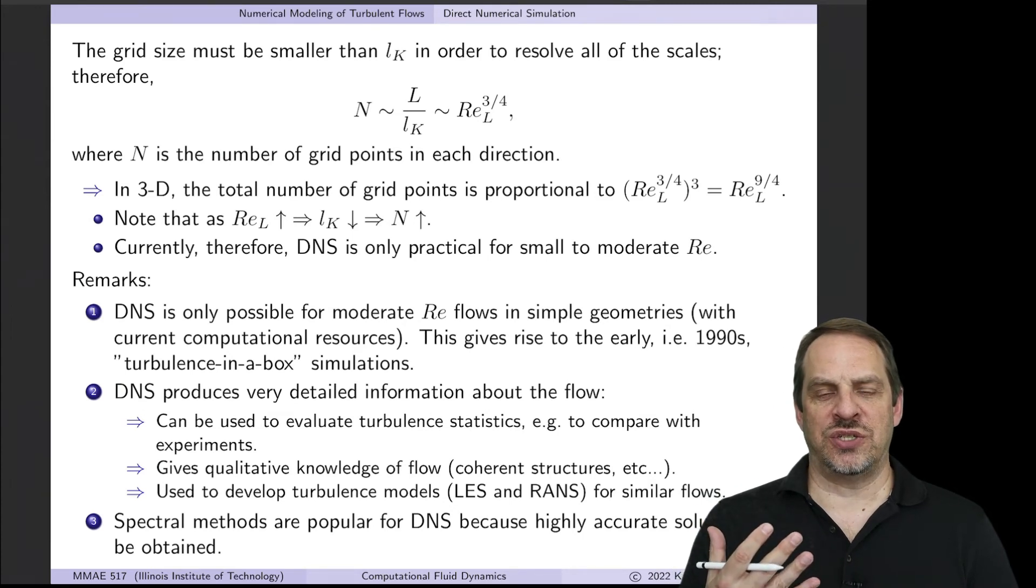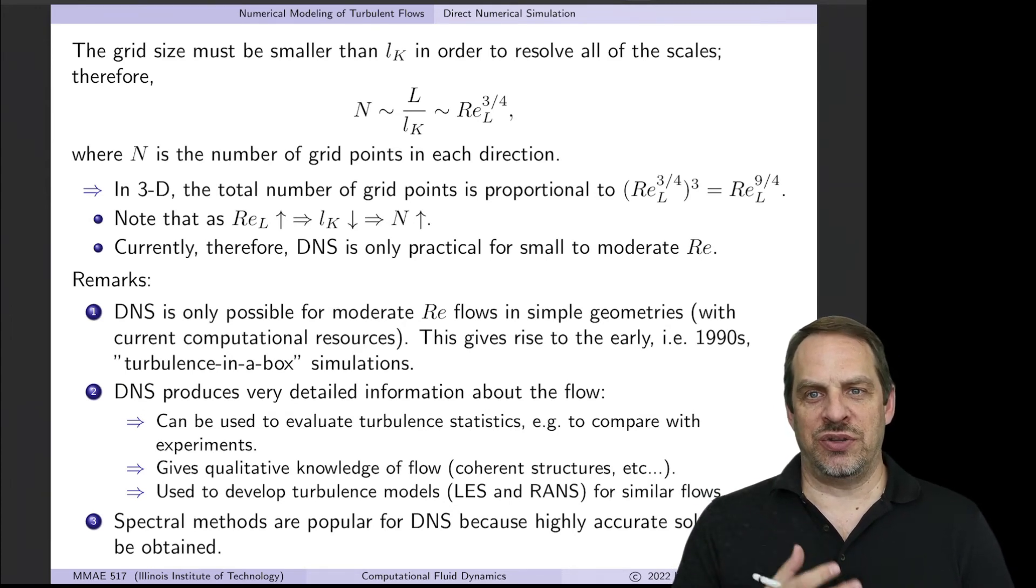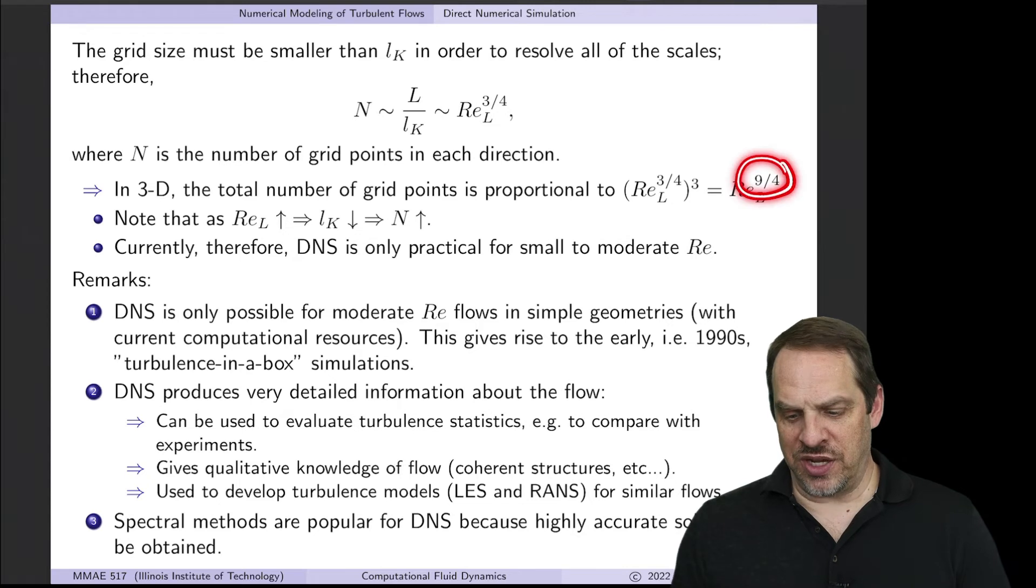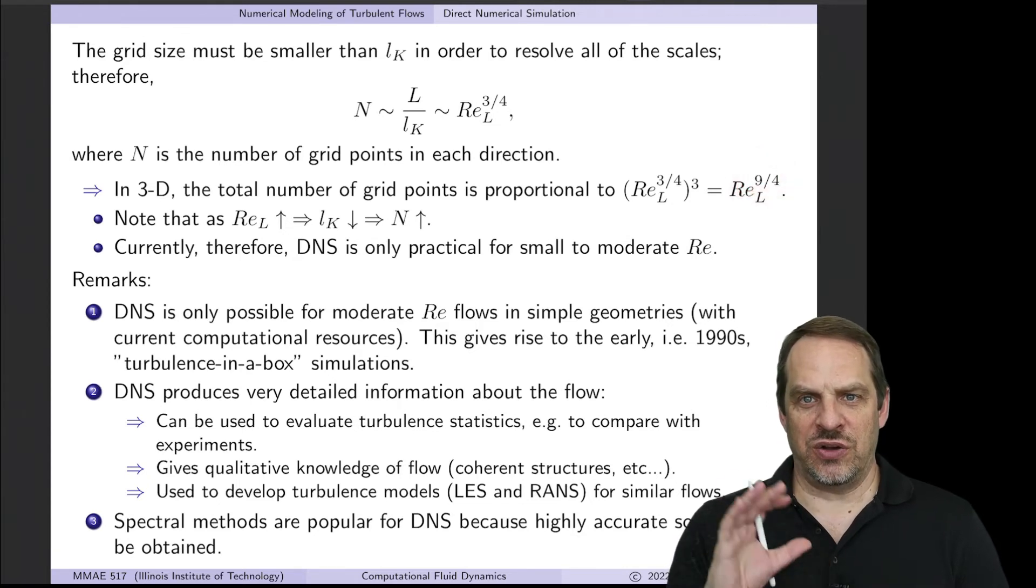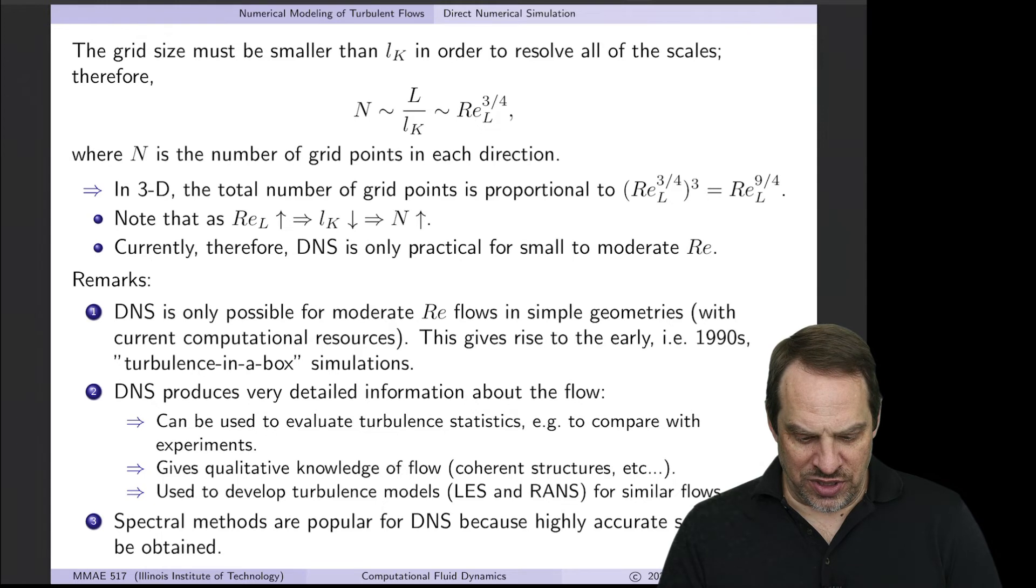Take a Reynolds number of 10⁶, which is typical in aerospace applications, divide that by 100 to get the Re_L, and then take the nine fourths power of that, and you'll see how quickly these numbers grow.